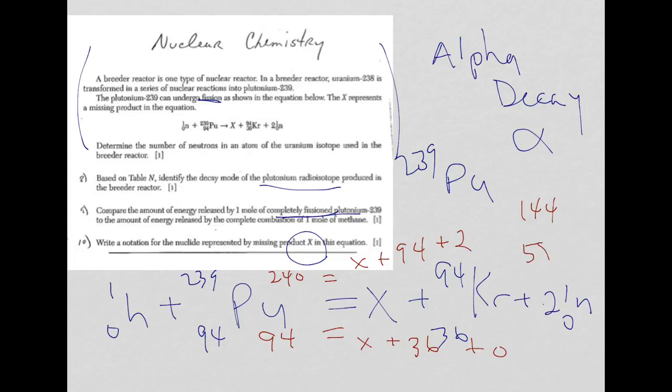So all I have to do is look up the identity for element 58, which is Ce, which is cerium. Make sure you put the symbol and the mass number along with the atomic number to get the answer.